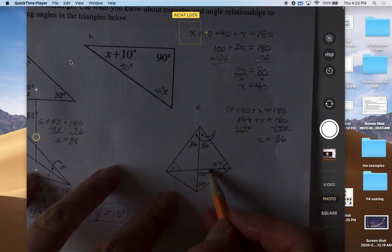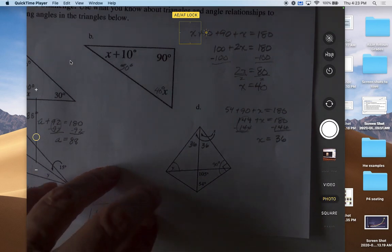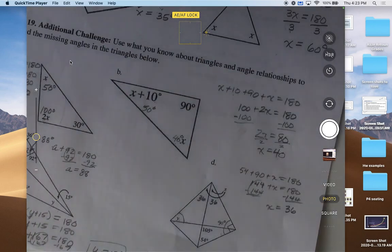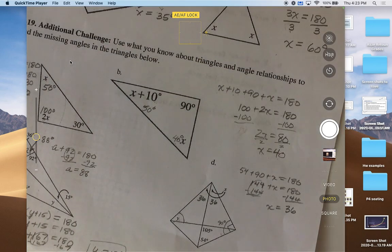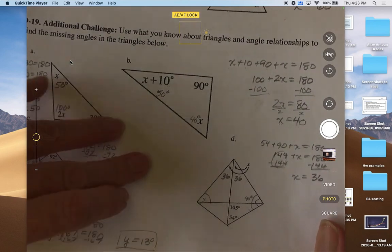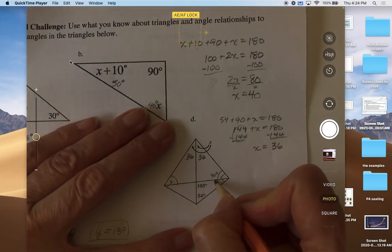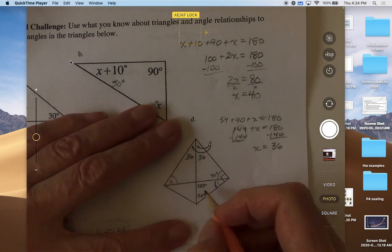In order to find the measure of this angle, we have to know this little angle because we've got these two angles already. So what we're going to do is first figure out what this little angle is.